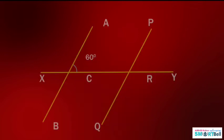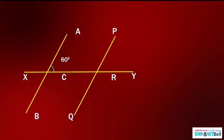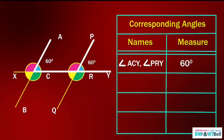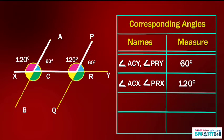We have an exercise on page number 25 in your textbook. Let's do that. In the figure, the pair of parallel lines and the cutting lines are all named, and the measure of one angle is given. We need to complete the table by writing the names and measures of all pairs of corresponding and alternate angles. We know angle ACY is 60 degrees. The corresponding angle of ACY is angle PRY, which is also 60 degrees. And angle ACX is 120 degrees — how do we get 120 degrees? We know the sum of a linear pair is 180 degrees, so 180 minus 60 equals 120 degrees.